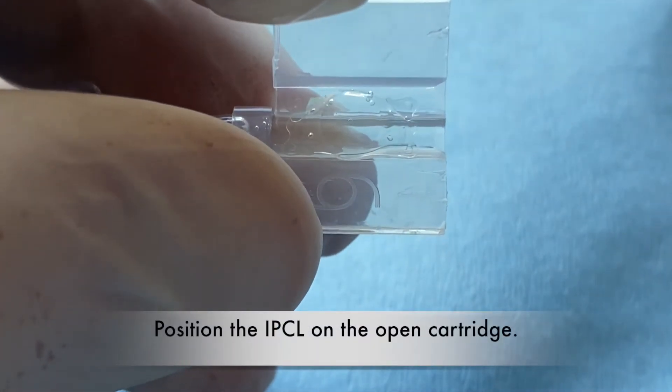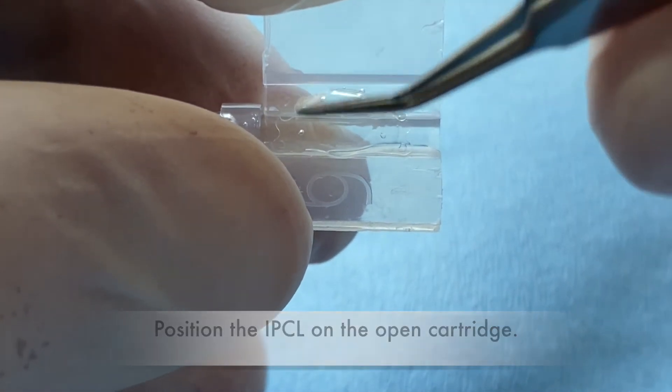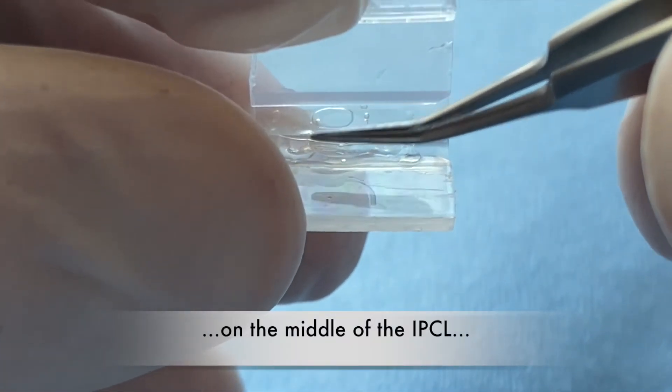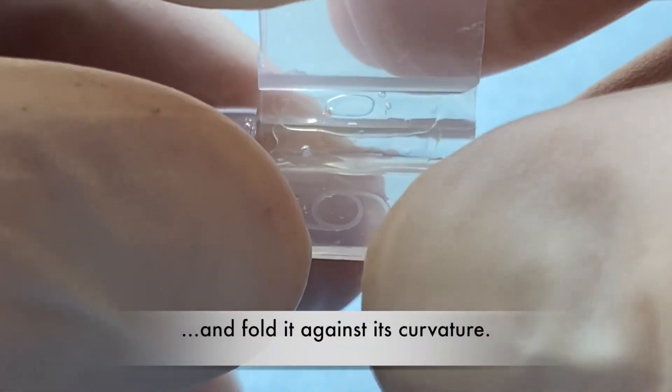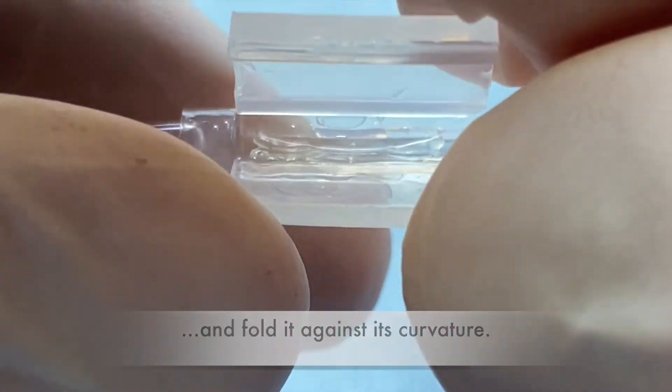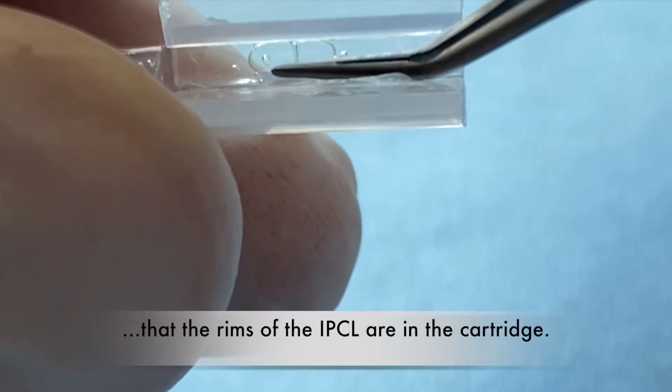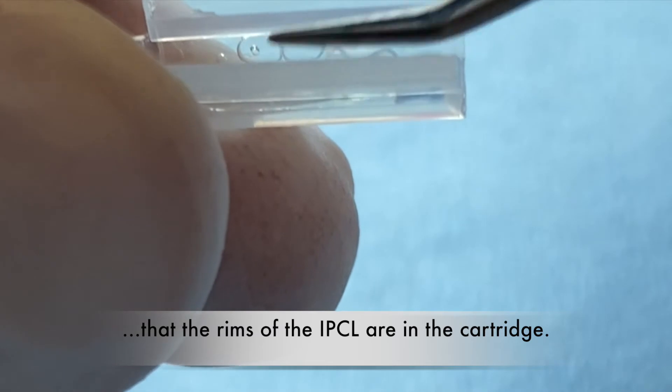Position the IPCL on the open cartridge. Press carefully with the closed forceps on the middle of the IPCL and fold it against its curvature. Close the cartridge by half and ensure that the rims of the IPCL are in the cartridge.